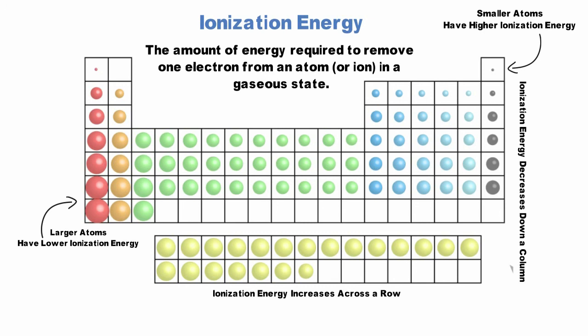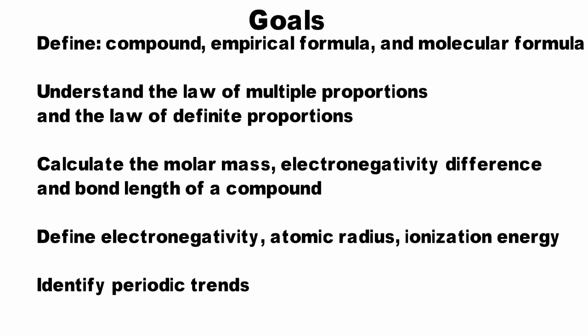We have now covered the beginning concepts of how atoms combine to form compounds. You should be able to define compound, empirical formula and molecular formula and be comfortable explaining the law of multiple proportions and the law of definite proportions. You should be able to calculate the molar mass, electronegativity difference and bond length of a compound. You should be able to define electronegativity, atomic radius, ionization energy and identify the periodic trends that relate to these terms.